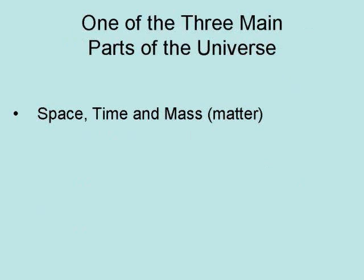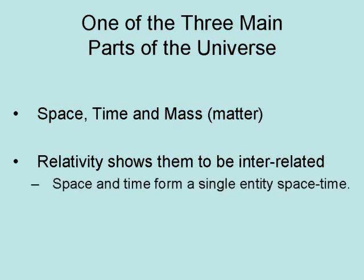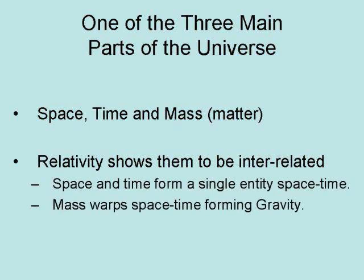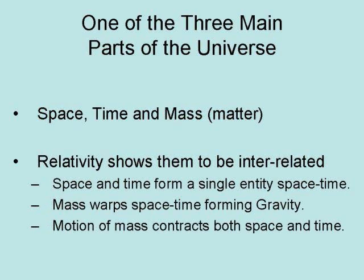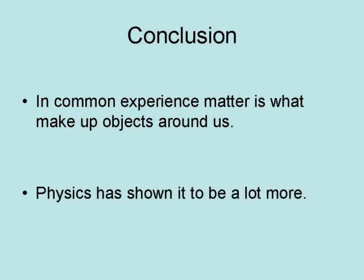The three main parts of the universe are space, time, and mass, represented here by matter. Relativity shows that they are interrelated. Space and time form a single entity called space-time. Mass warps space-time, forming gravity. And the motion of mass contracts both space and time. In common experience, matter is what makes up objects around us, but physics has shown it to be a lot more — it is a fundamental part of the universe.